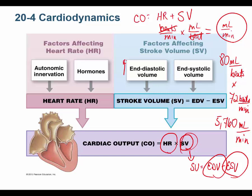The higher the end diastolic volume, the greater the cardiac output. The lower the end systolic volume, the greater the cardiac output — less blood left in the heart after it beats. I also have autonomic innervation: the sympathetic nervous system speeds up my heart, the parasympathetic slows it down, and hormones like epinephrine and norepinephrine speed it up.